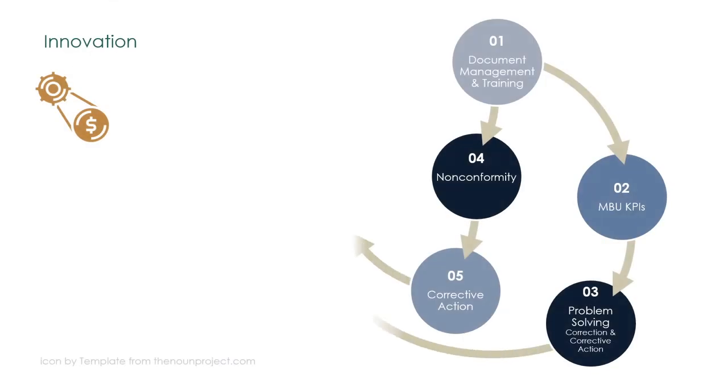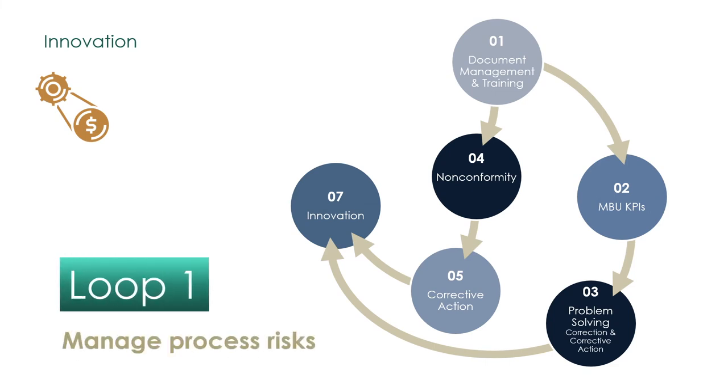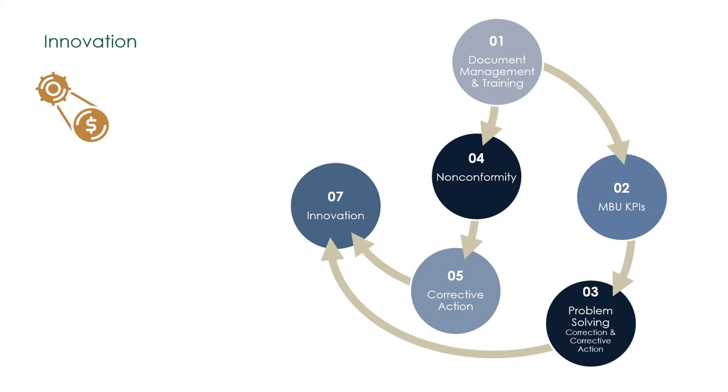The innovation form was introduced in Loop 1, Manage Process Risks. It captures the many projects required to implement the solution or countermeasure resulting from the outcome of a corrective action.